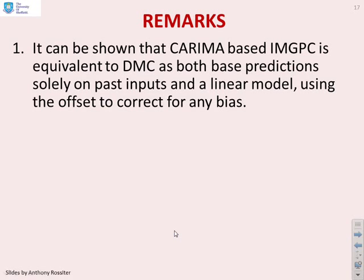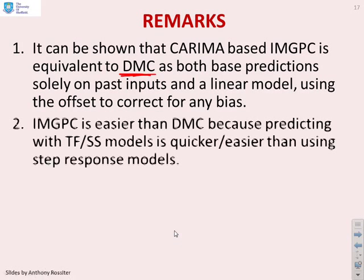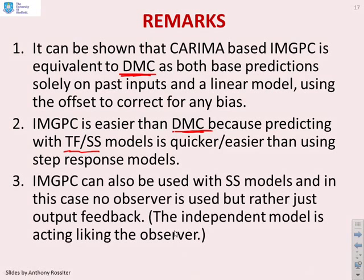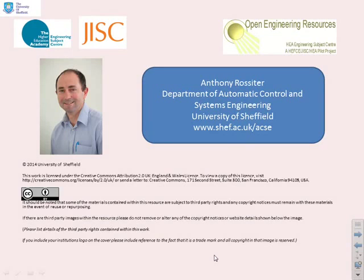In remarks, it can be shown that Karima-based independent model GPC is equivalent to DMC, as both base predictions solely on past inputs and a linear model using the offset to correct for any bias. However, independent GPC is easier than DMC because predicting the transfer function or state-space models is quicker and easier. It's more compact. Basically, you need fewer parameters. You can also do IMGPC using state-space models, and in this case, you don't need an observer. And you might say, great, don't need an observer, that makes life much easier. But do remember, the fact that you have a simulation of the independent model embedded within your control law suggests the independent model is, in essence, acting like an observer.